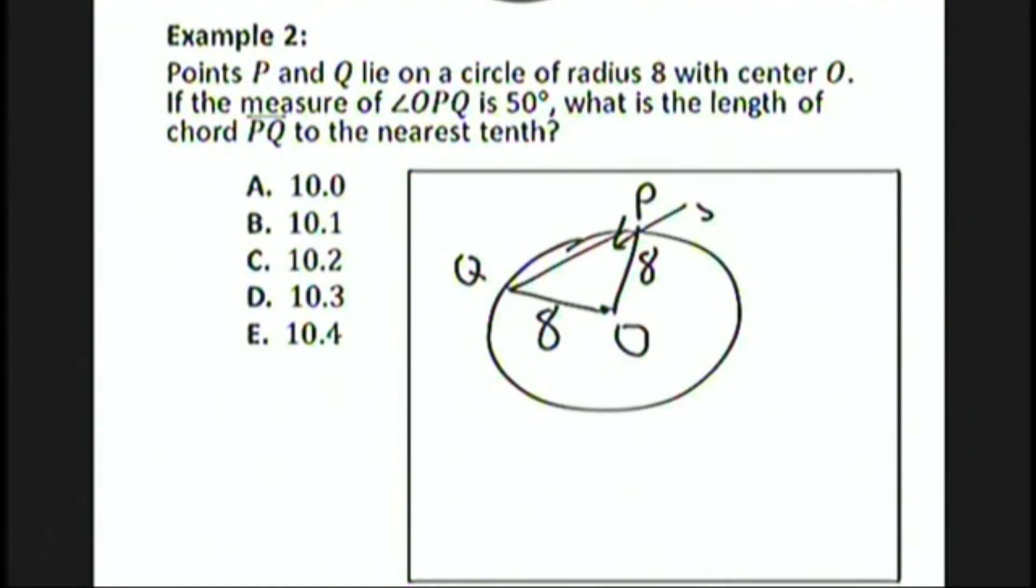so this angle is 50 degrees. And since this is an isosceles triangle, this angle is also 50 degrees. What is the length of chord PQ to the nearest tenth? Let's call that x.